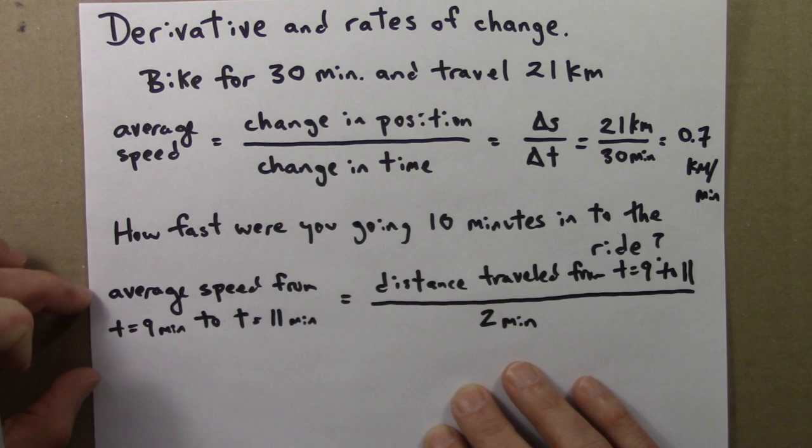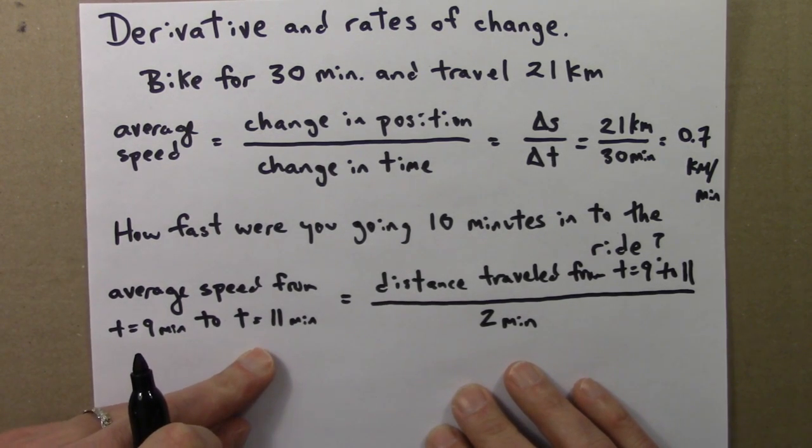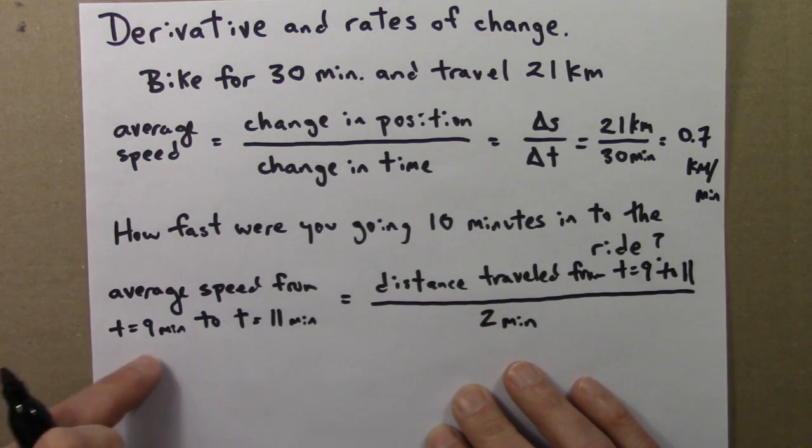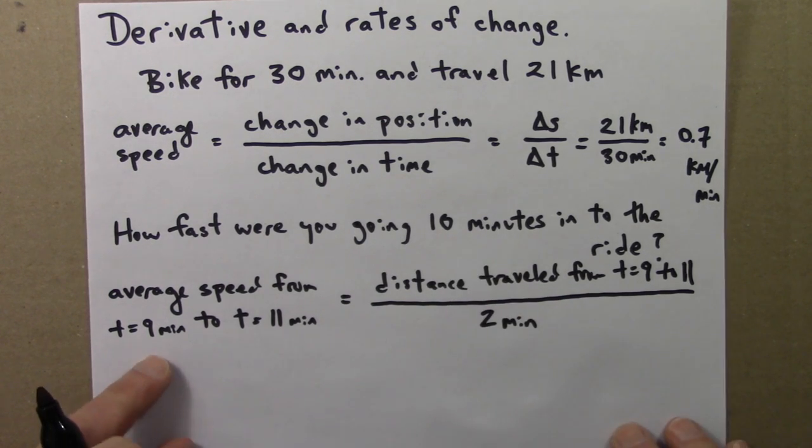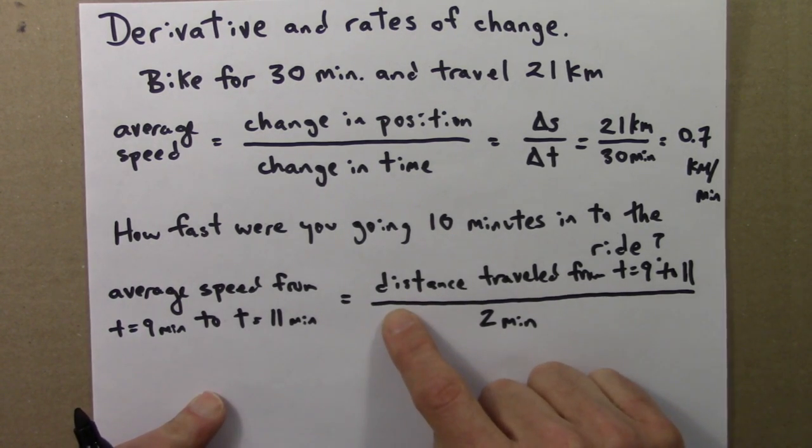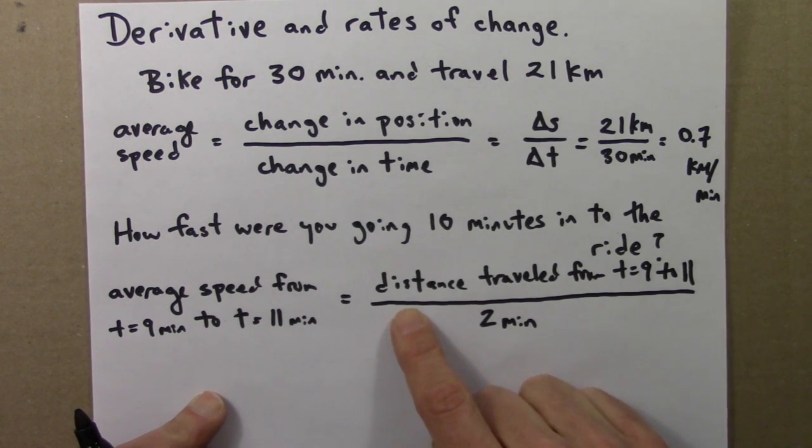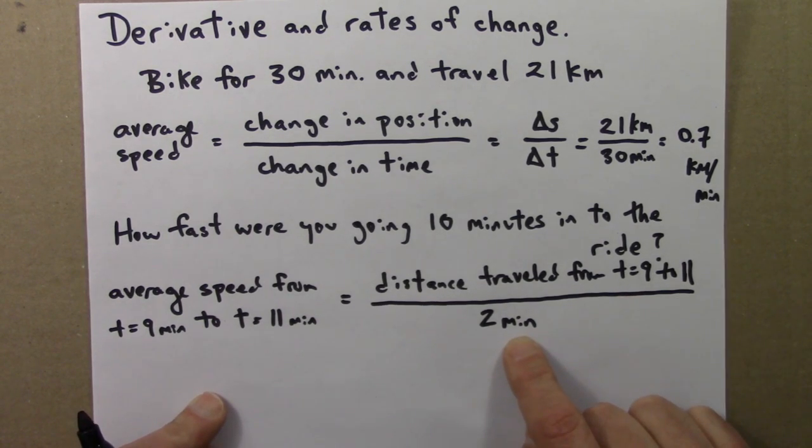So, you might say, the average speed from t equals 9 to t equals 11 minutes. Same idea. It's an average speed, but now the time interval is smaller. And notice that 10 minutes is right in between 9 and 11. And then, that would be the distance traveled in this time, not during your entire journey, but just the journey from t equals 9 to 11. And you'll divide that by the time that has elapsed, and that would just be 2 minutes.